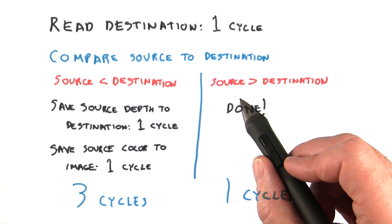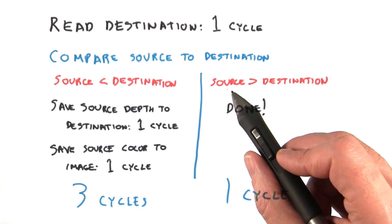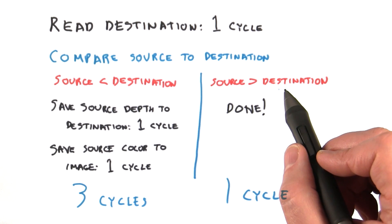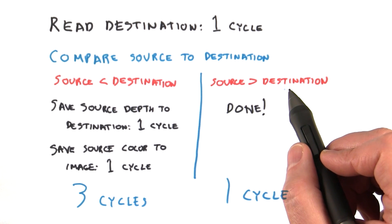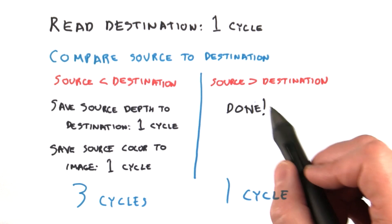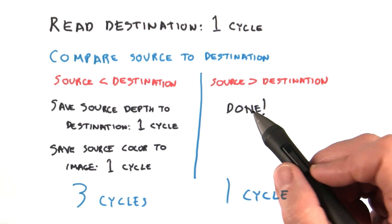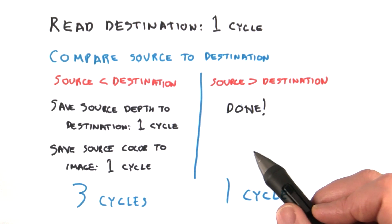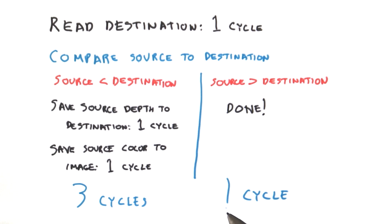However, if we have the case where the source is greater than the destination, we're done. The object is hidden and we don't have to do any further processing, so we only need one cycle.